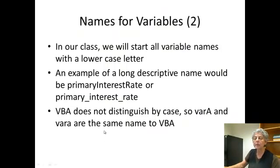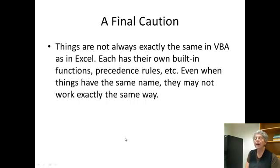Here's an example of a long descriptive name, for example primary interest rate. I can write it like this, what's called camel case, by making a capital letter for the beginning of each integral word, or I can separate words with underscores. Either one's the same. And the other thing to know is VBA does not distinguish by case. So this name with a capital A and this name with a little a are the same name as far as VBA is concerned.